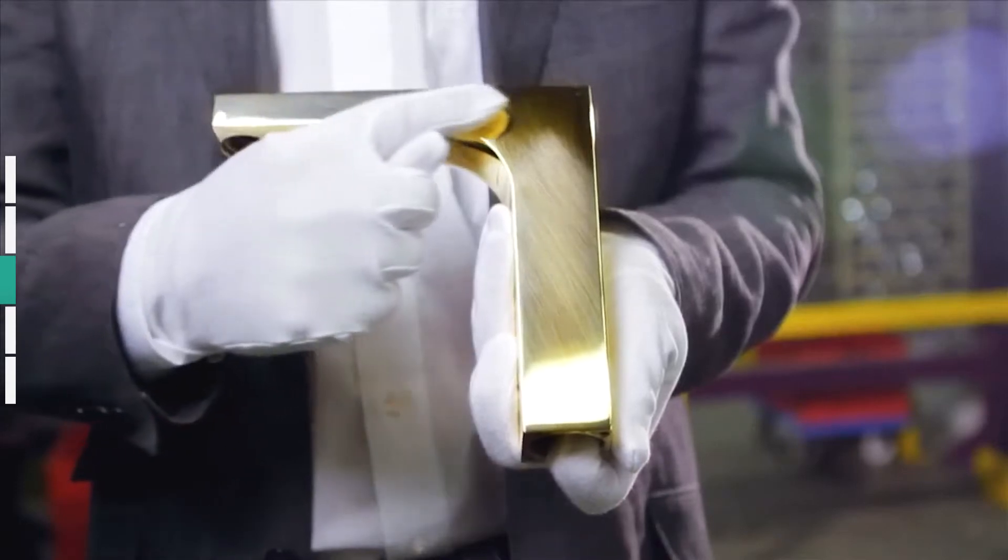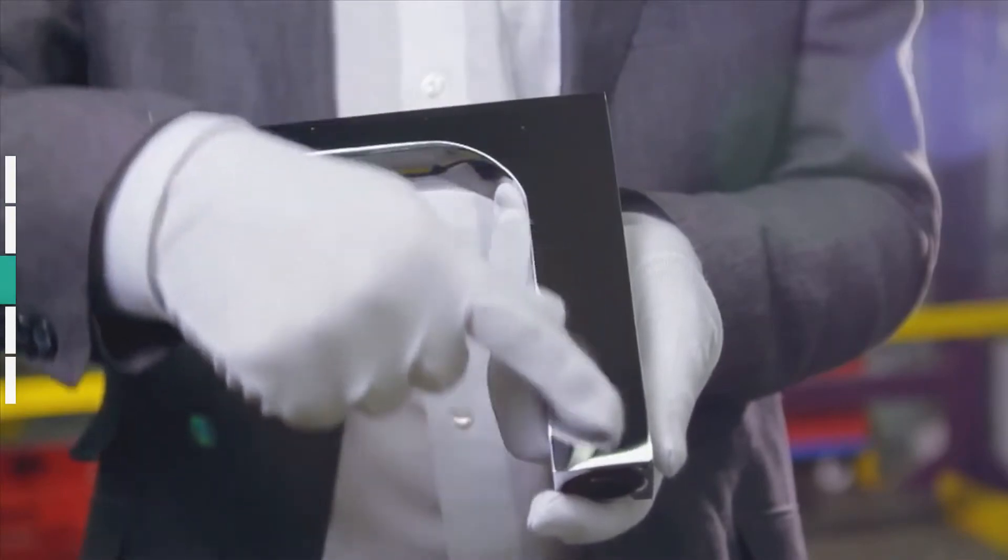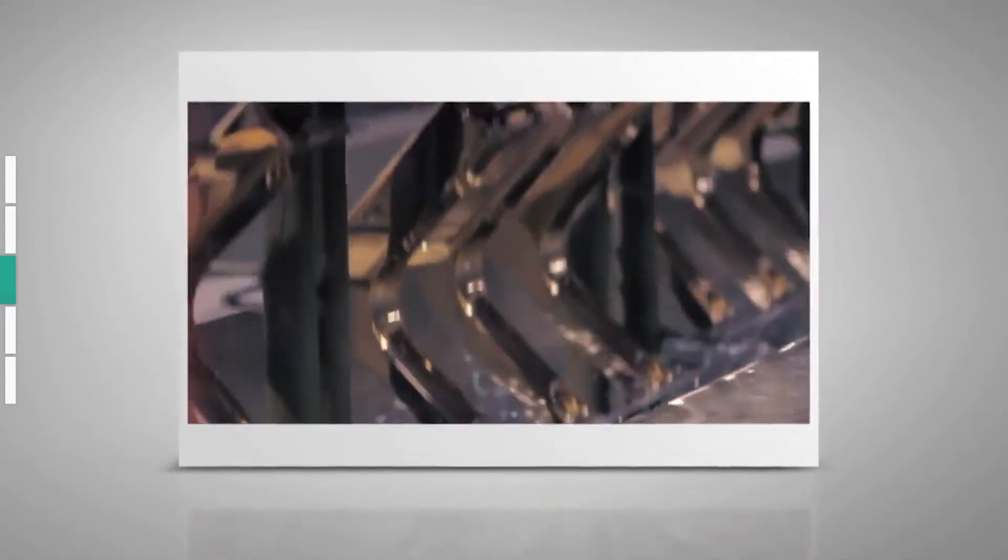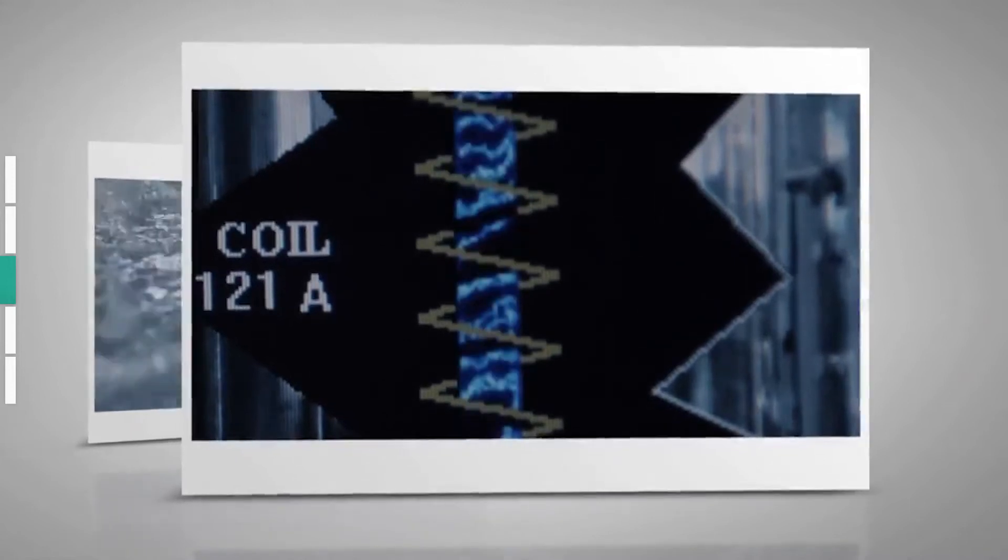In Hansgrohe's surface coating department, the brass mixer body is given a robust, durable finish. This is achieved chemically, through electroplating, or as a further stage, also physically, through PVD coating.